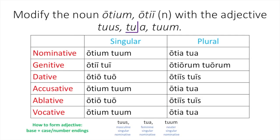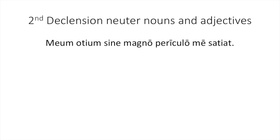You'll have noticed that the nominative, accusative, and vocative forms all have that same pattern — oteum tuum — because of our nice neuter rule, where the accusative and vocative look exactly like your nominative. And otea tua is the same in these three cases in the plural, again because of that nice neuter rule. Rather than having you practice by declining another noun and adjective, let's look at it in a sentence.